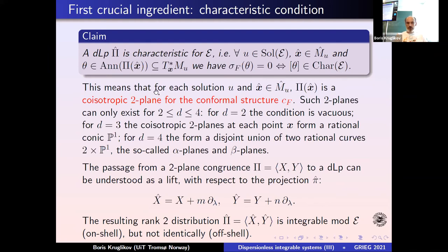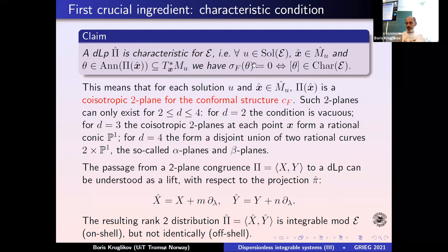When we talk about second-order equations, at once from the general statement: if you have non-degeneracy and a second-order equation, you have a conformal structure, and it means that the distribution π is a coisotropic two-plane. If you take its annihilator, you get an isotropic covector — in other words, the plane is coisotropic. This gives a restriction because, for non-degenerate conformal structure, coisotropic two-planes can exist at most in dimension four.